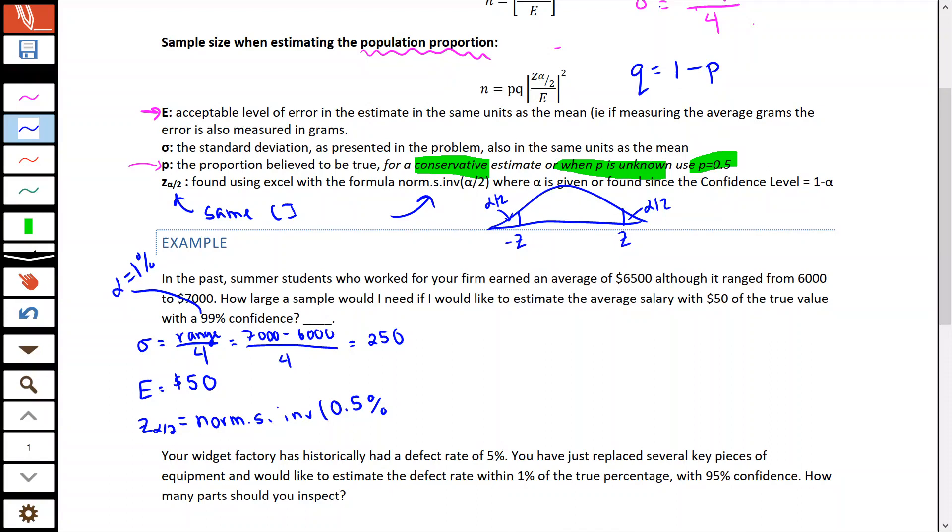When I go to find the Z value, it's going to be norm dot S dot inverse of half of that alpha, 0.5%. You can put that in with a percent sign, or you can convert it to 0.005, you'll get the same answer. This gives us our Z value of negative 2.575.